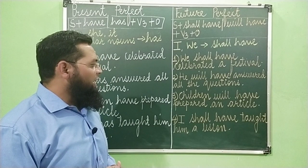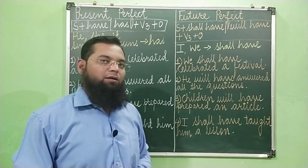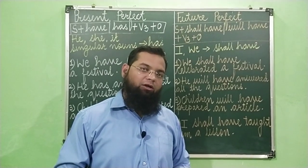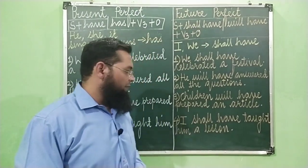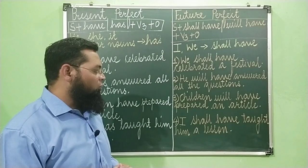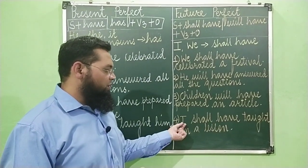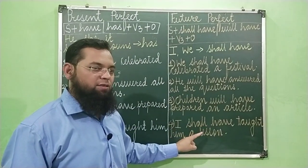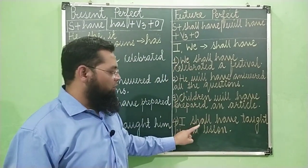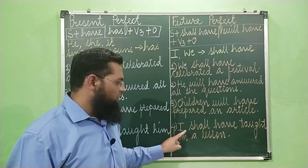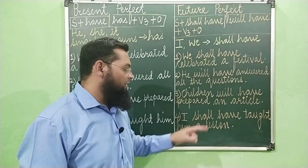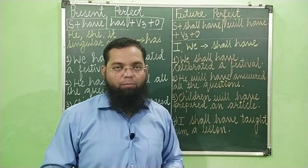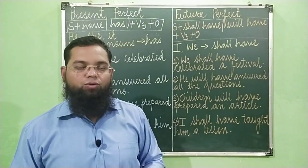Children will have prepared an article. Bachche ek article tayyar kar chuke honge — future mein. And the last sentence: 'I shall have taught him a lesson.' With the subjects I and we, we have to use 'shall have' in future tenses. I shall have taught him a lesson. Main usse ek lesson sikha chuka hoonga.